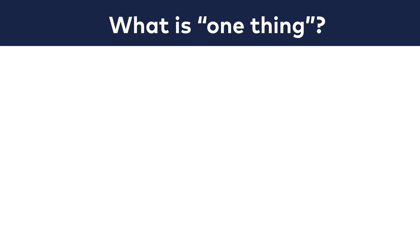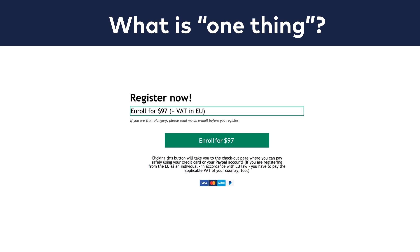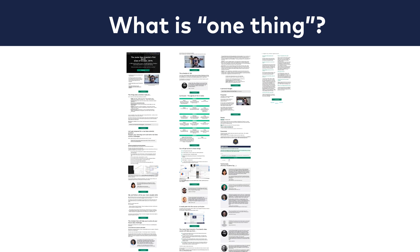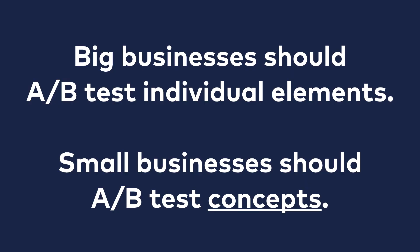One more thing about this whole change-one-thing-at-a-time myth: although this might lead to philosophical depths, what is one thing at all? Is it one picture, one color, one headline, one pixel, one block of your webpage, one section, or a whole landing page? Well, you decide, but I recommend following this concept: big businesses should A-B test individual elements like pixels, button texts, and button placements, but small and medium-sized businesses should A-B test concepts — like a whole landing page, site-wide messaging, site-wide design, and so on.